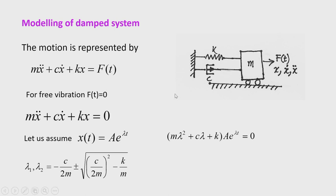Now let us model a damped system. A general model is represented by mass m, stiffness represented by spring k, and a dashpot representing damper c. These are the system parameters m, k, and c, and external force is F. The equation of motion includes a second derivative term and a first derivative term due to damping. For free vibration F(t) = 0; taking x = Ae^(λt) and substituting gives the characteristic equation mλ² + cλ + k = 0.